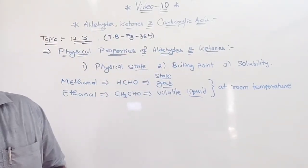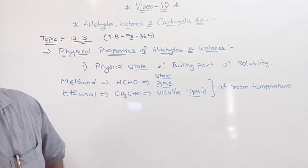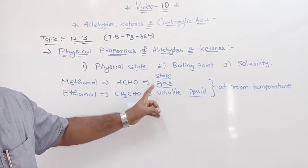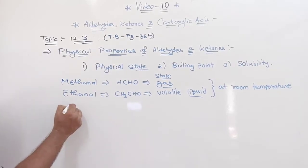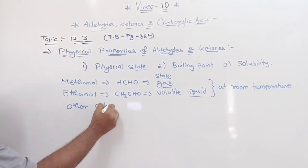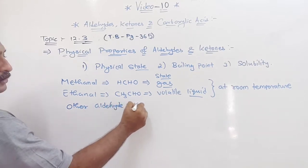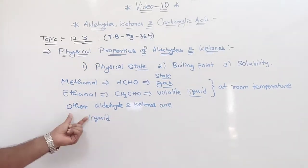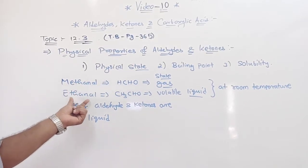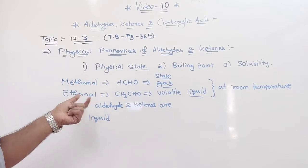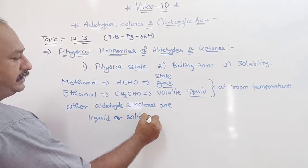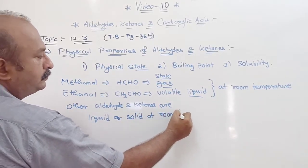This is given in your textbook on page 365. Methanal is a gas at room temperature and ethanal is a volatile liquid. Other aldehydes and ketones — meaning after ethanal, like propanal, butanal and ketones — are liquid or solid at room temperature.